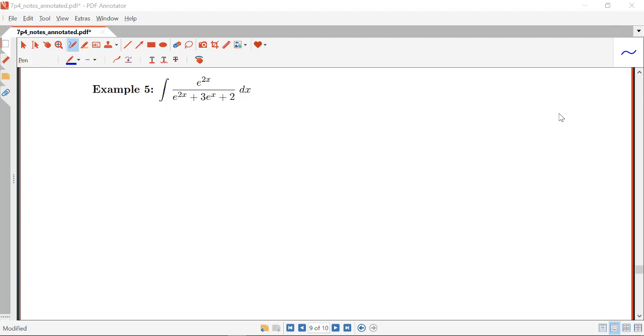But it turns out a u-substitution can help turn this into a rational function. So let's see how that might work. Notice that I have all these e to the x's appearing in here. I have an e to the 2x here and an e to the 2x here and e to the x down here. But what if we let u be e to the x? Then my du will be e to the x dx.